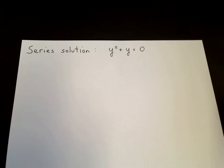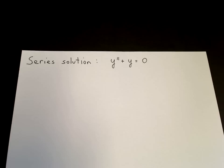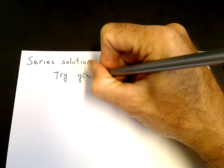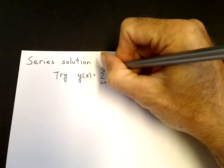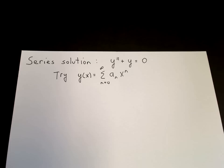In this video, I want to demonstrate the method of series solution of a differential equation. We take as our specific example y double prime plus y equals zero, and we know the solution is going to be cosine x and sine x. I want to see if we can get this solution by a series ansatz. So we will try y of x equals the sum from n equals zero to infinity of a sub n times x to the n — a solution in power series form.